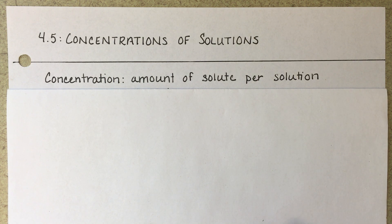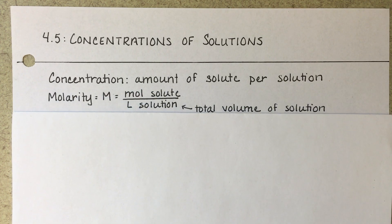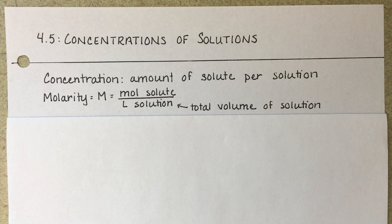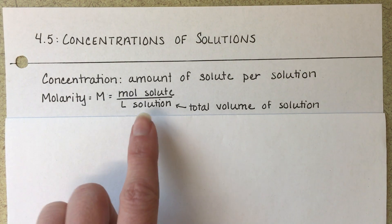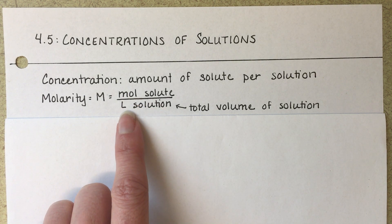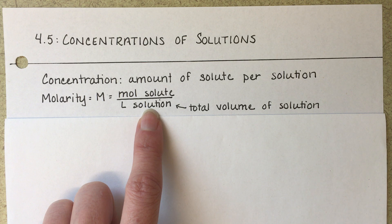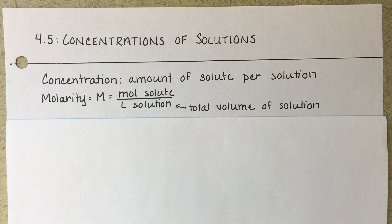In chemistry, the most common way to express concentration of a solution is with molarity. Molarity, which is abbreviated with a capital M, is calculated by taking the amount of solute in moles and dividing it by the volume of the entire solution in liters. So it's a pretty simple calculation.